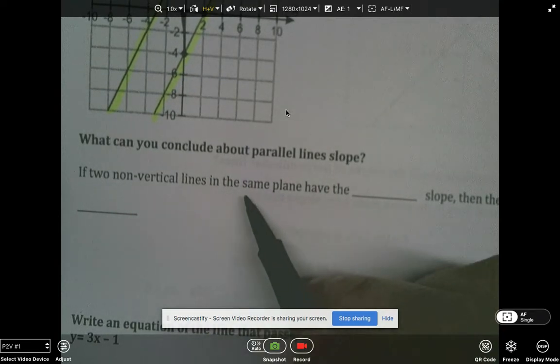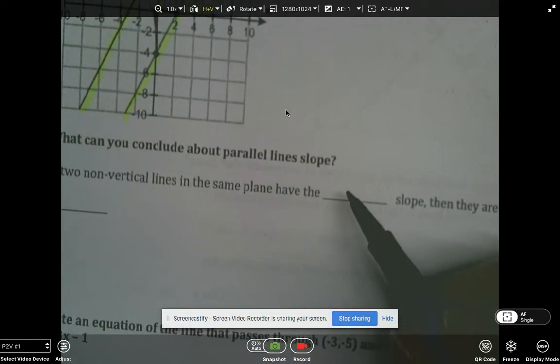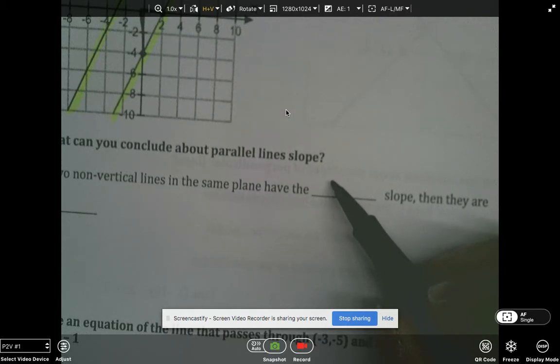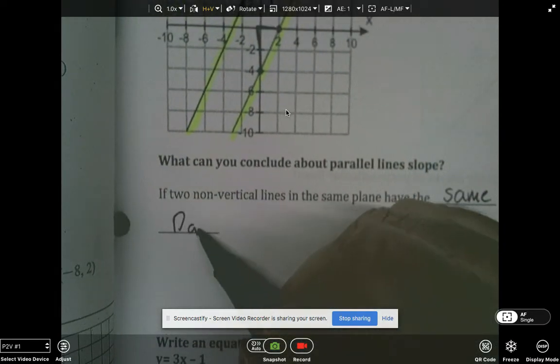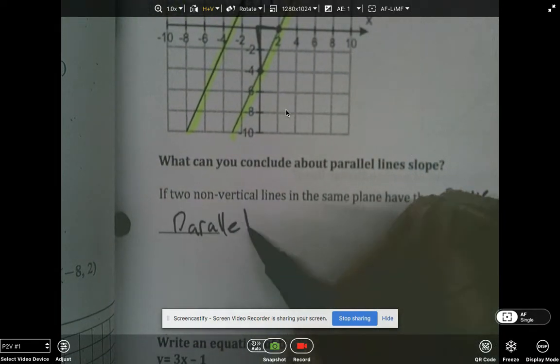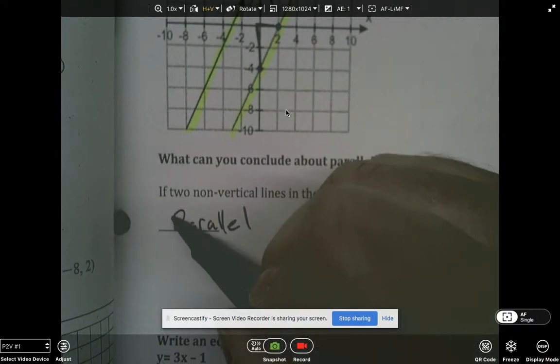Two non-vertical lines have the same slope, then they are parallel. So we learned that actually last chapter. That's parallel.